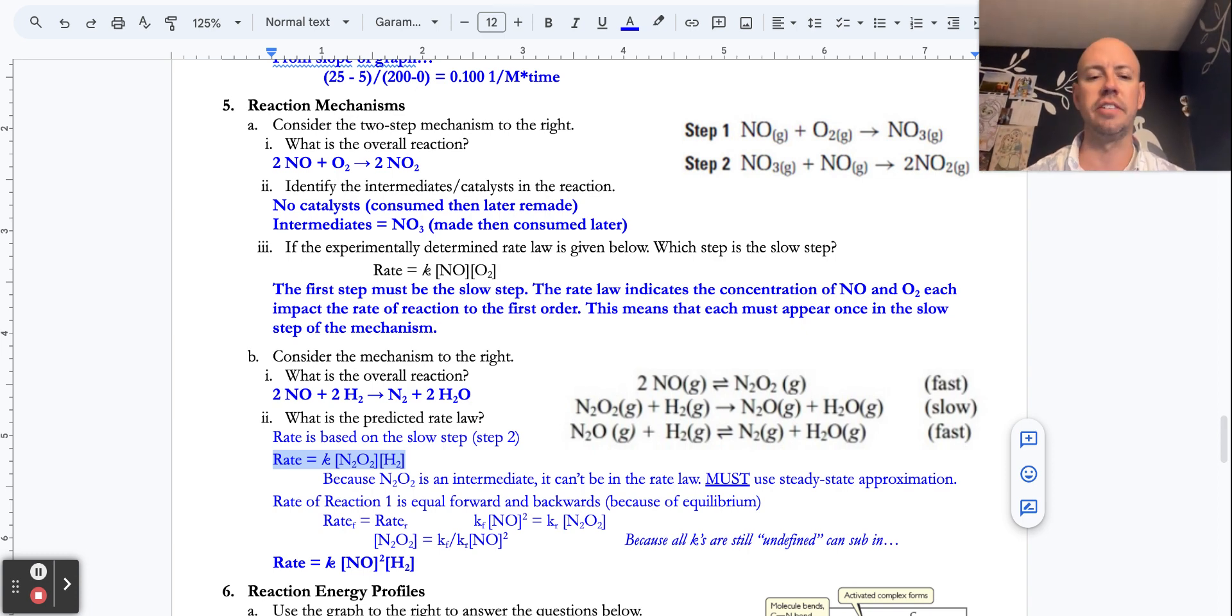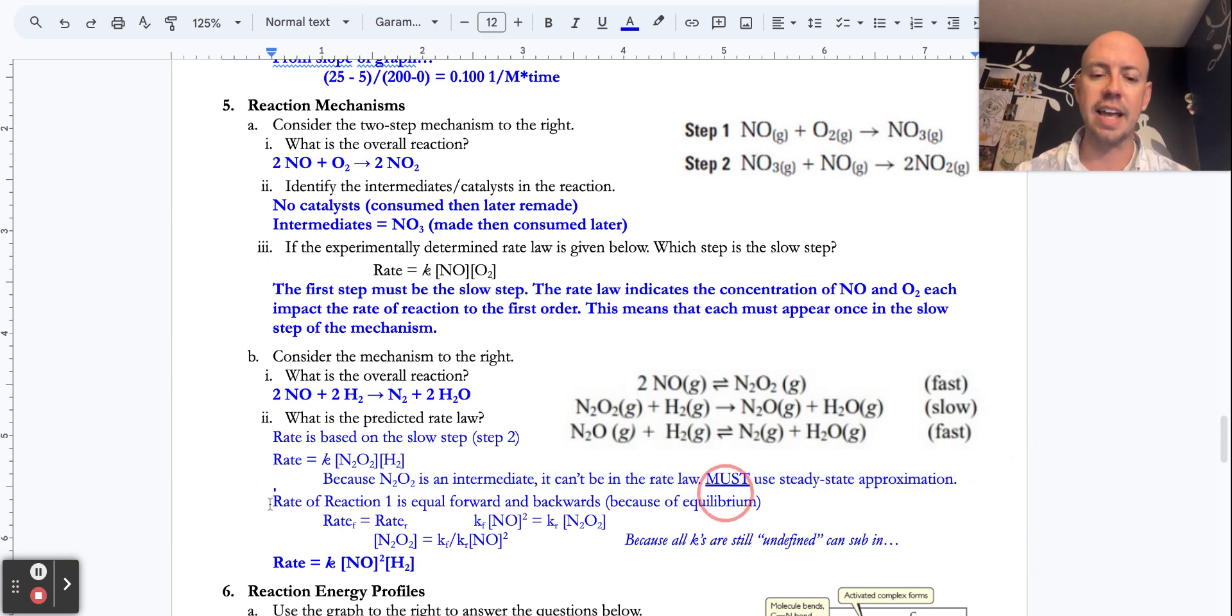So we use a weird thing called a steady state approximation. You won't see this a lot, but it's good to be familiar with it. Because it's how we come up with weird orders other than 0, 1, or 2. So reaction 1 is an equilibrium.